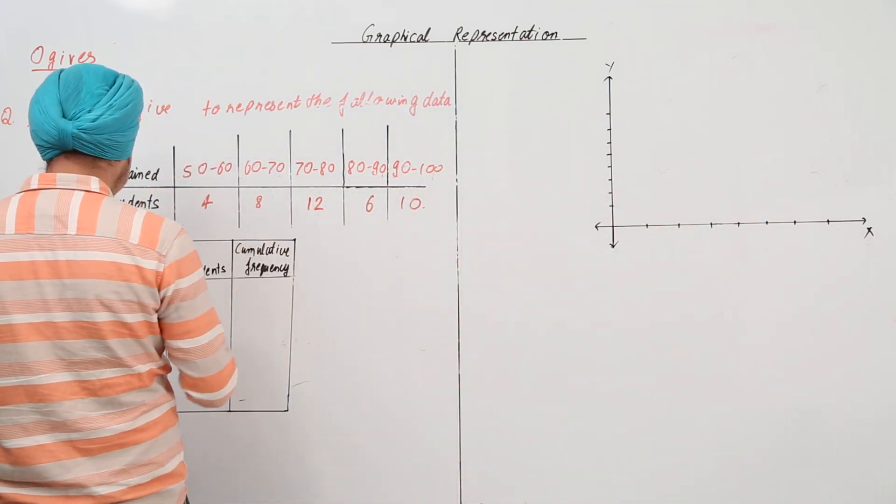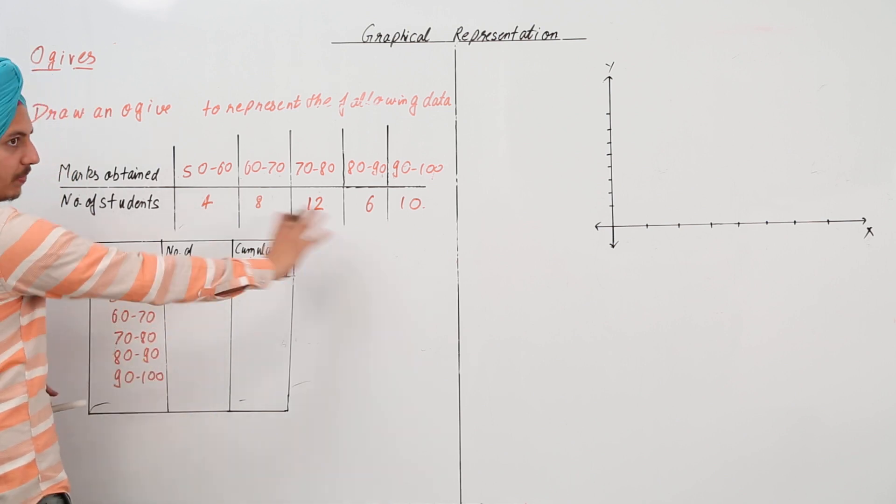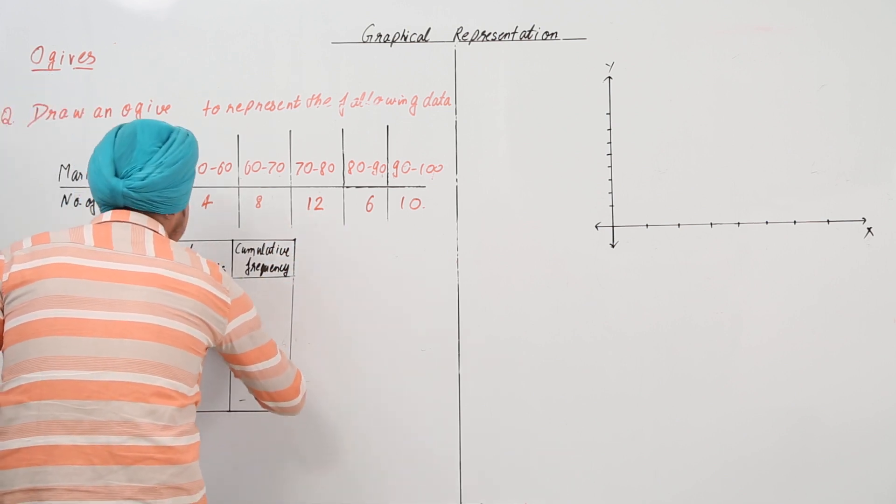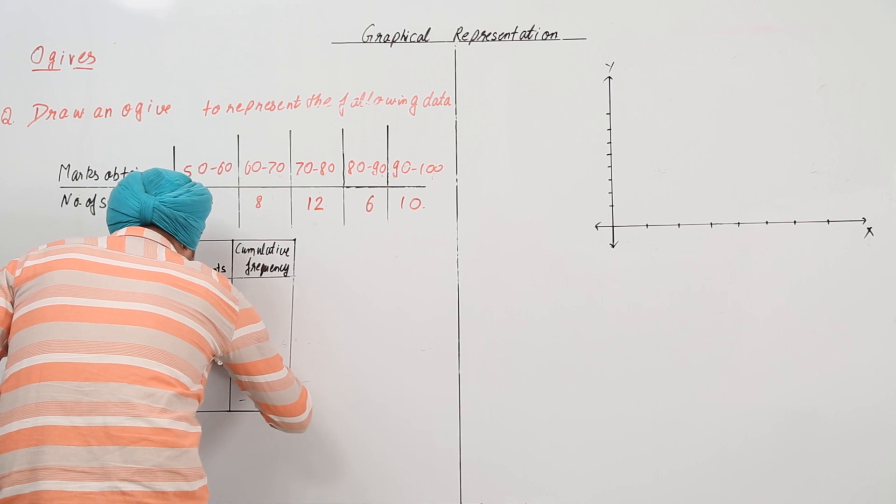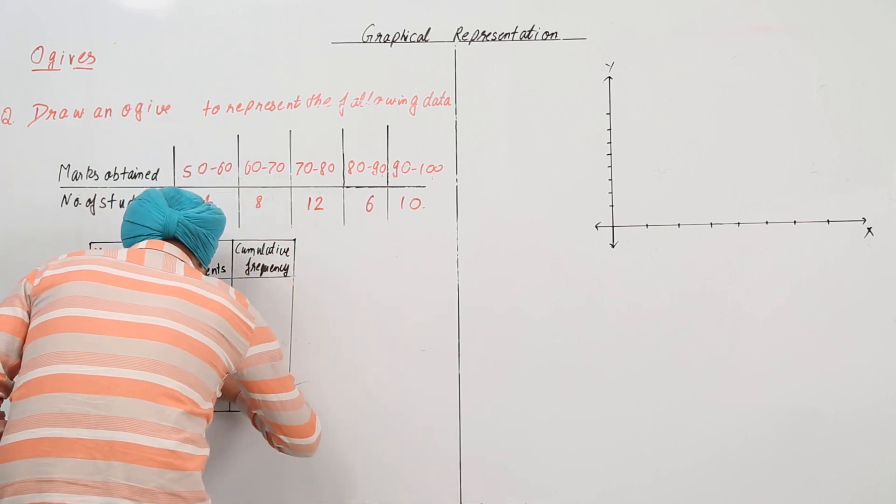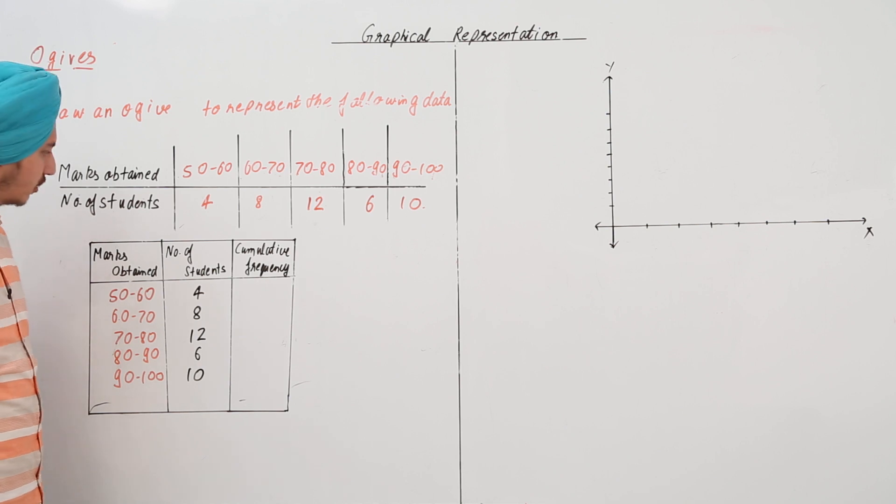So, first of all, the marks obtained from 50 to 60, I'm just copying these down over here. These are 4, these are 8, these are 12, these are 6 and these are 10. These are the marks obtained.